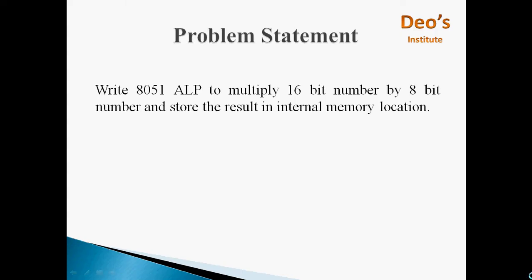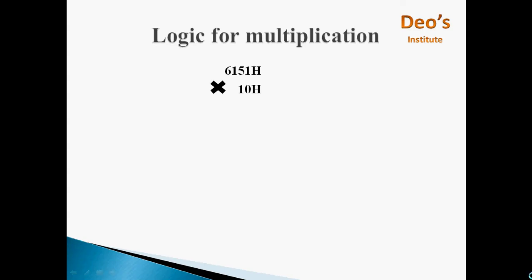Problem statement: write an 8051 assembly language program to multiply a 16-bit number by an 8-bit number and store the result in an internal memory location. Before going towards the actual program, first we will see how the logic will be applied for multiplication. Here 6151H is the 16-bit number and 10H is the 8-bit number.